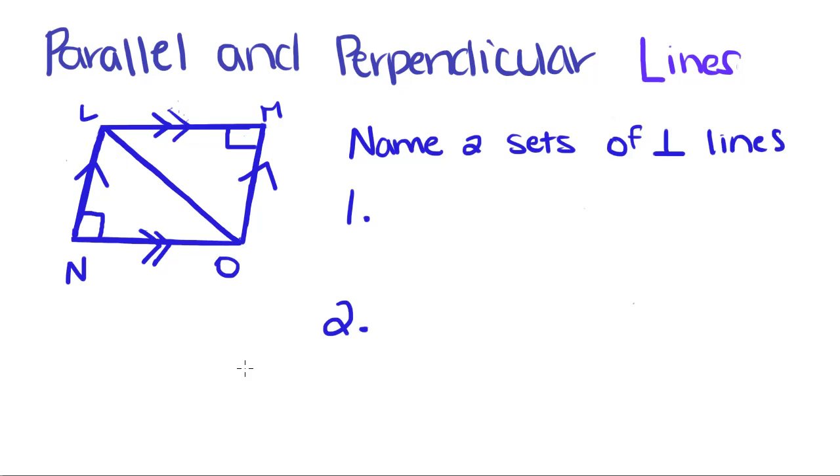Name two sets of perpendicular lines. Like we said, perpendicular lines intersect to form right angles. We know that none of the parallel lines can also be perpendicular.